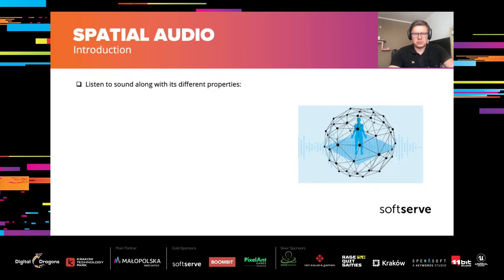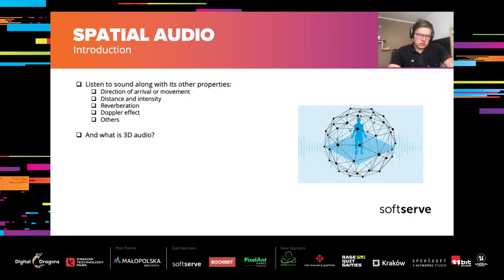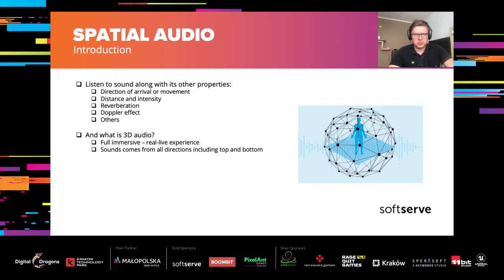Let's start with a simple definition of spatial sound. Spatial sound allows us to listen to sound along with its different properties. We can list here direction of arrival or movement of sound objects present in the captured sound field. We can feel the distance and intensity of individual sound objects, and perceive effects such as reverberation, Doppler effect, and others. Sometimes we also encounter the term 3D audio, which is frequently used to express that sound can be heard from all directions, including top and bottom, so the user can be fully immersed.